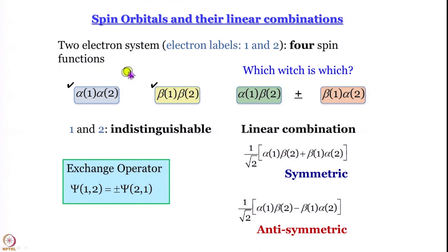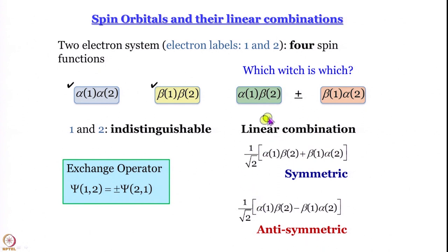For two-electron systems, we have learned that we can have four spin functions: α(1)α(2), β(1)β(2), but we cannot have α(1)β(2) and β(1)α(2) by themselves because we cannot distinguish between electron 1 and electron 2. So the best we can do is take linear combinations. There is no reason to stick only to a plus combination; a linear combination connecting the two terms by a minus sign is equally acceptable. The wave function with a plus sign is symmetric with respect to exchange; the wave function with a minus sign is antisymmetric with respect to exchange.